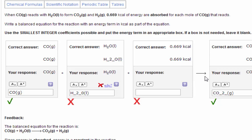The fact that it's absorbed means that the heat term goes on the left side of the arrow. So it's an endothermic reaction. And it is exactly 0.669 because for each mole of carbon monoxide, that's how much heat is absorbed.